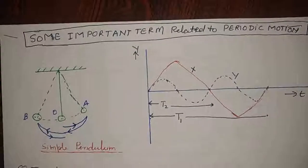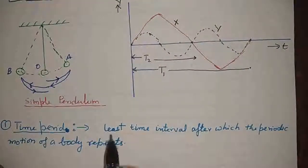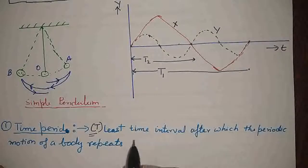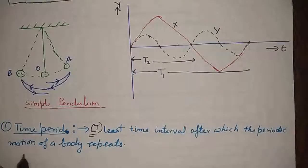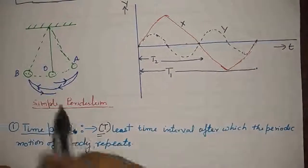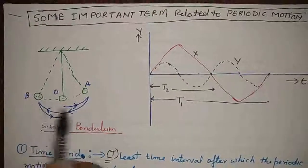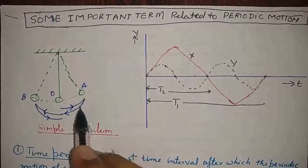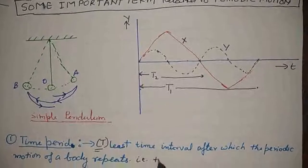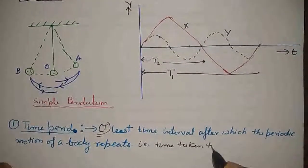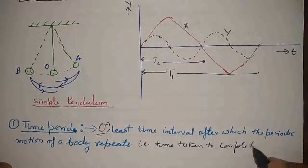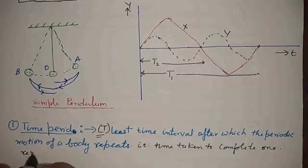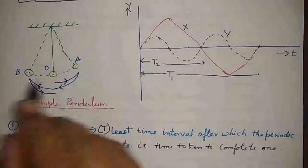Now the first term, that is the time period. Time period is denoted by capital T and it is defined as the least time interval after which the periodic motion repeats its path. In the example of a simple pendulum, when it repeats the path, one oscillation, this is time taken to complete one oscillation. This is also called time taken to complete one revolution, one complete path.